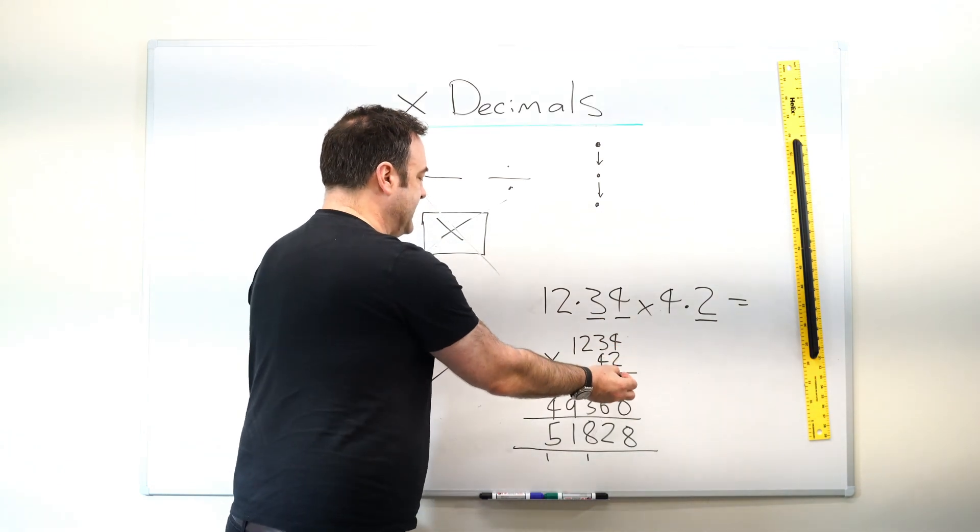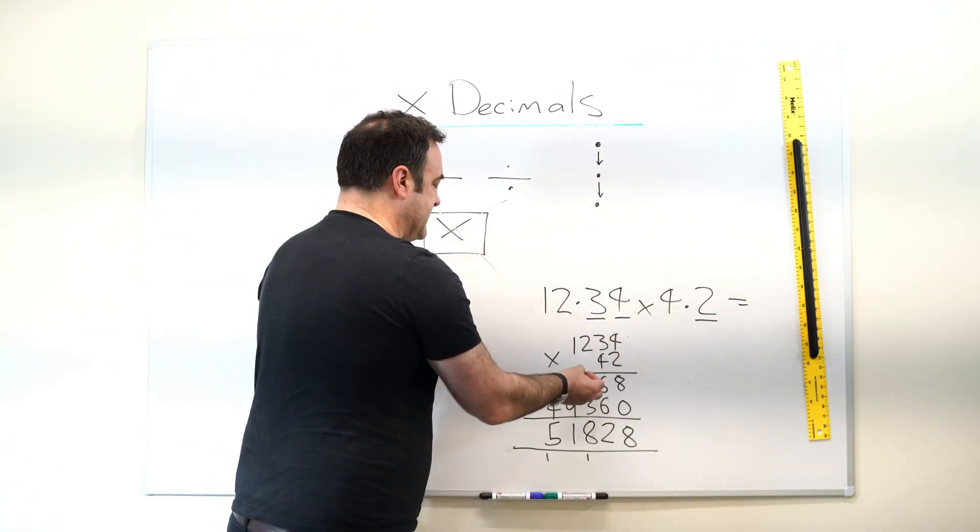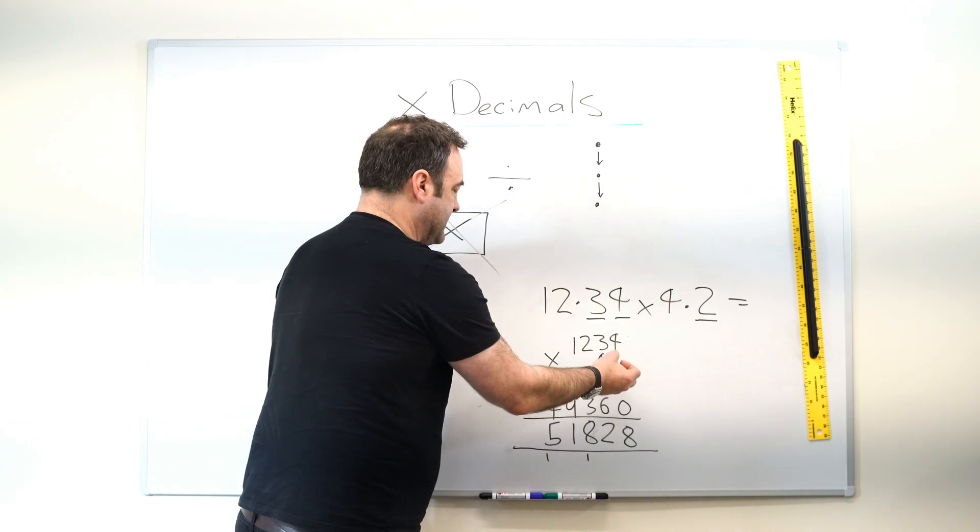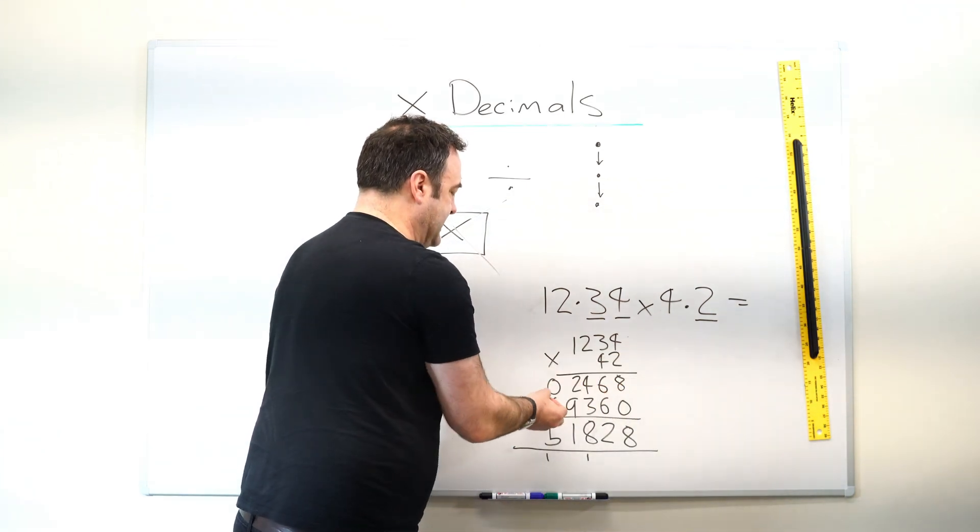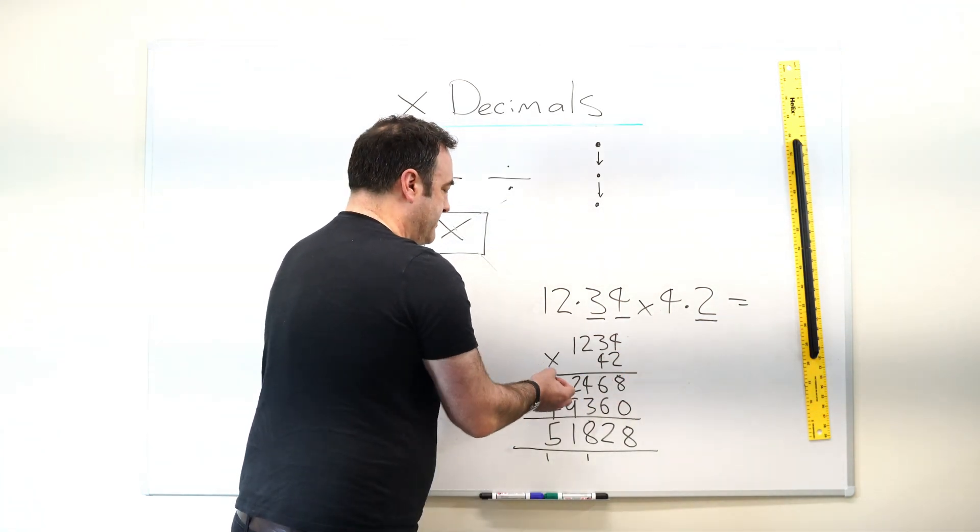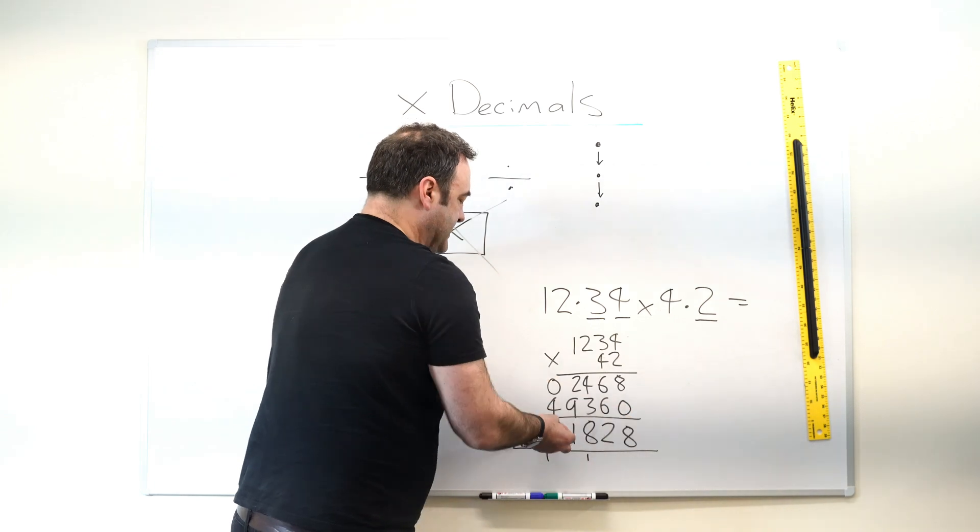As you can see, I've done my units first here. I've dropped down. I've zeroed out to the tens, and I've multiplied all the tens. Then we add them up. We get to this number.